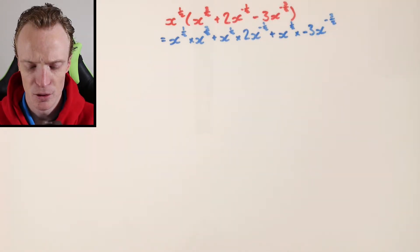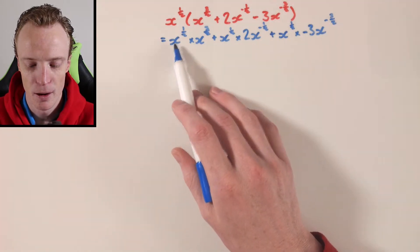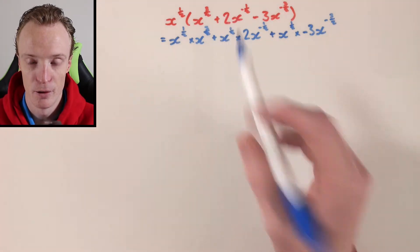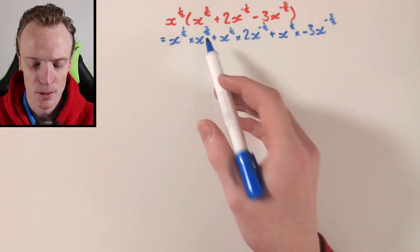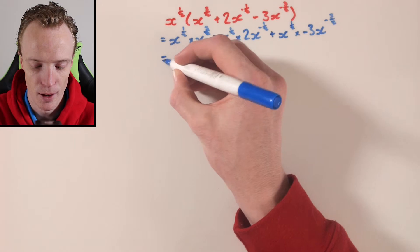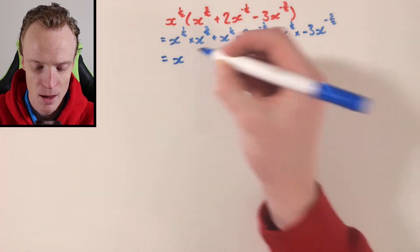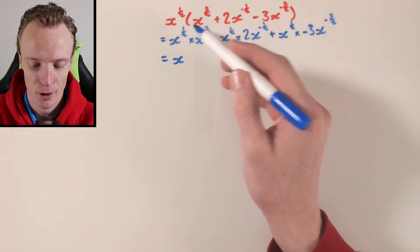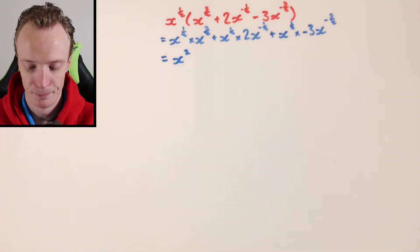So let's now do this multiplication step by step. The very first one is I need to multiply x to the power of a half with x to the power of 3 over 2. That's our first index law, where I'm multiplying two indices with the same base. So I keep the base — that x — the same, but I'm now going to add the exponents. So I've got a half add 3 over 2, which gives x squared.